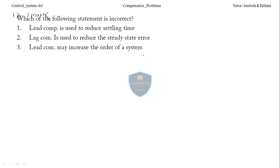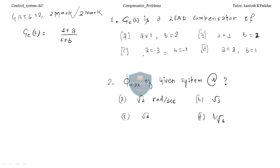The fourth point: the lag compensator always stabilizes an unstable system. This is incorrect — not always. The lag compensator is used to stabilize the system, but if the order of the system is very high, the lag compensator will not stabilize it. That is why the word 'always' makes this an incorrect statement.